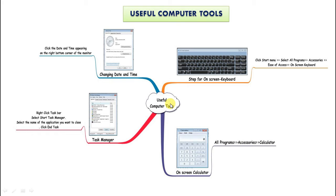Children, let us learn about the use of changing date and time. This tool is used to change the time that appears on the task bar when the time shown on my computer is wrong. To do this, go to the settings to change the date and time.